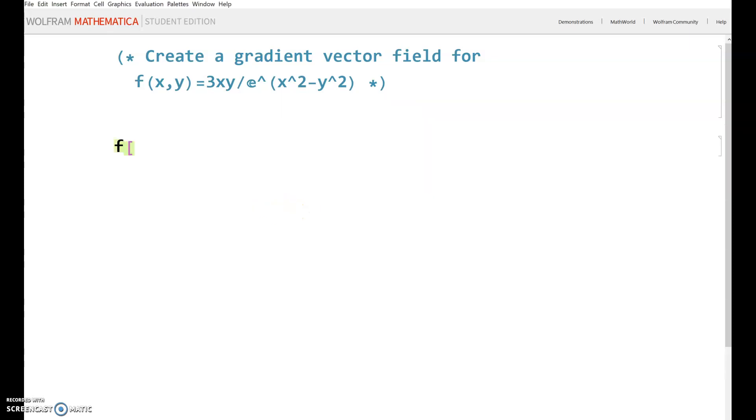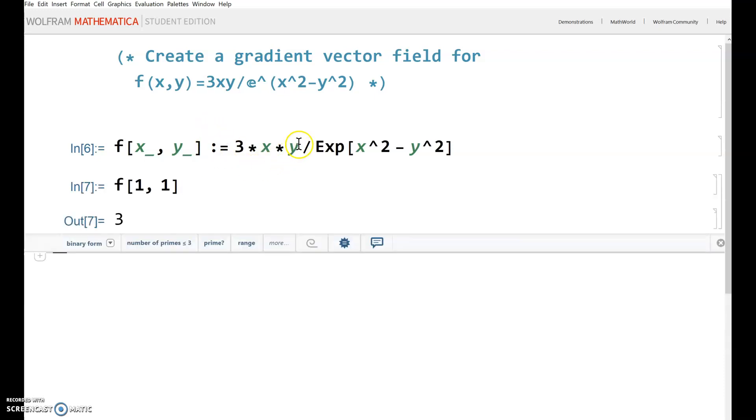First, let's set up this function. We define f[x_, y_] := 3*x*y / Exp[x^2 - y^2]. I prefer using the Exp command for e to some power. Now to verify I defined the function correctly, let me test it. If x is 1 and y is 1, I get 3. That's correct because 3 times 1 times 1 is 3, divided by e^0. Looks like I entered it correctly.